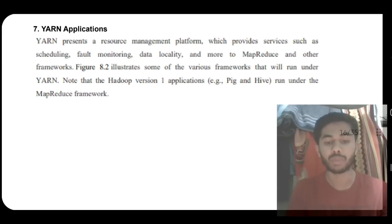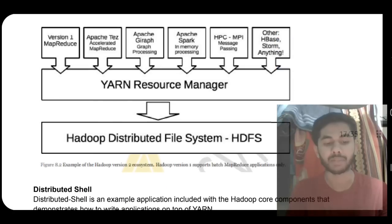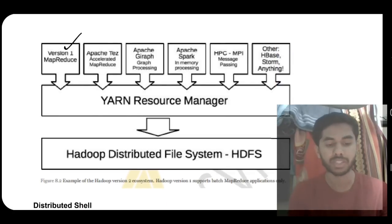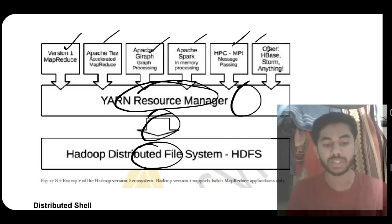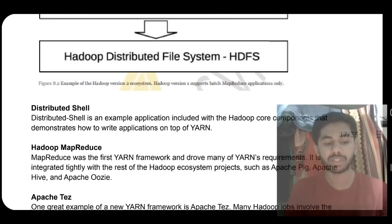Moving on to the last question of this module: What are the YARN applications? YARN is a resource manager tool. Which things use YARN? You have to make this diagram mentioning things like MapReduce, Apache Tez, Apache Giraph, Apache Spark, HPC, and HBase. This is calling the YARN Resource Manager, and that will be sent to the Hadoop file system. First it manages using these tools and sends to the file system.